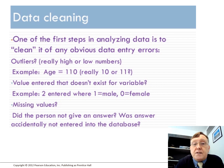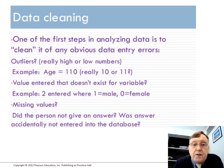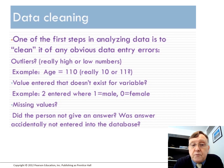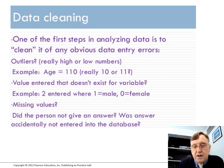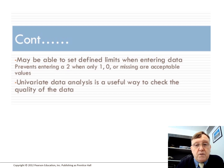Data cleaning: one of the first steps in analysing data is to clean it of any obvious data entry errors — for example, outliers with really high or low numbers. If we're asking somebody's age and it comes out as 110, it might mean they entered 11 or 10. A value entered may not exist for that particular variable — for example, somebody enters number two where one is male and one is female. Missing values may mean they didn't give an answer, or the answer was accidentally not entered into the database. You may be able to set defined limits when entering data, preventing a two being entered when only a one or zero are acceptable — the system won't allow it. In other words, you already have a list of acceptable respondent answers. Univariate data analysis is a useful way to check the quality of the data.